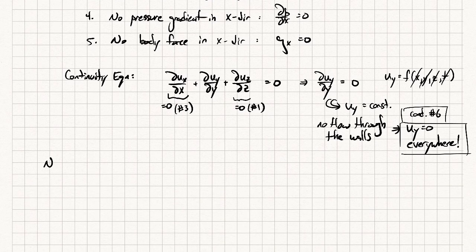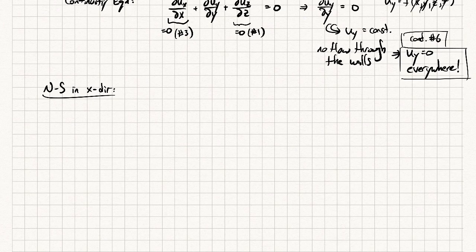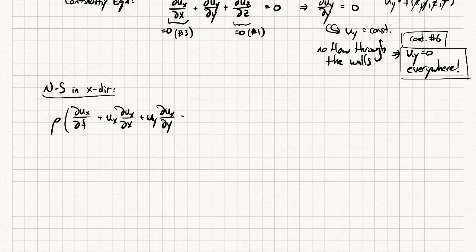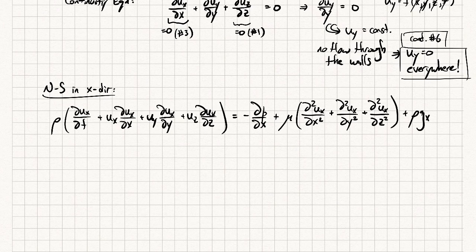Now let's move to the Navier-Stokes equations. The one I'm interested in is the x direction, because we're trying to find the x velocity component — the velocity profile. Let's write out that equation. On the left-hand side is density times the Lagrangian derivative of the x velocity — like mass times acceleration per unit volume. On the right-hand side are the net pressure force, net viscous force, and body force in the x direction per unit volume. It's really just F equals ma for a Newtonian fluid.